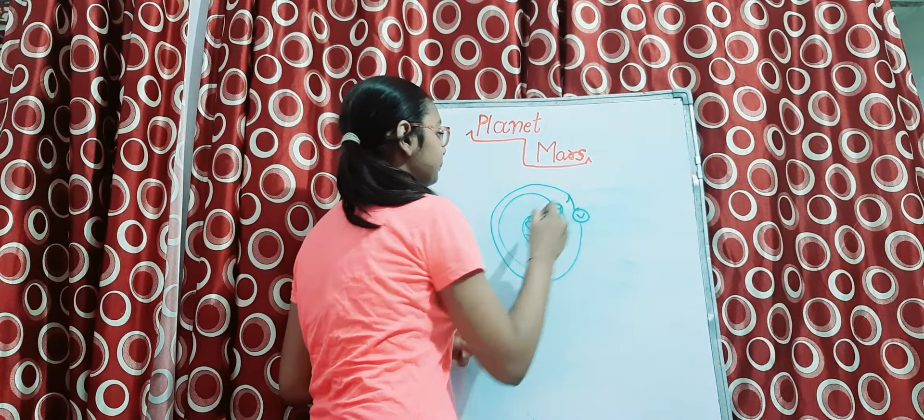It takes 687 days to revolve around the Sun — that is the orbital period of Mars.